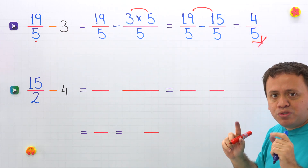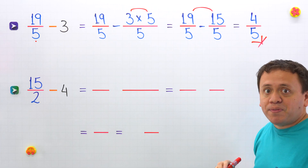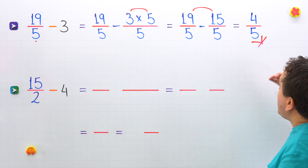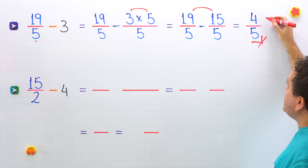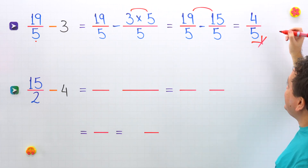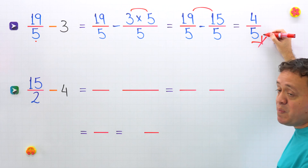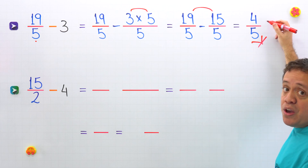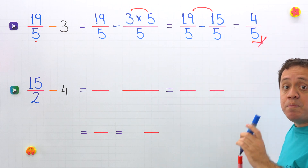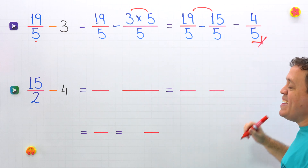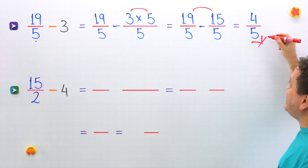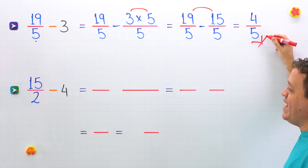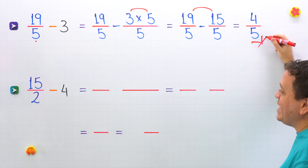At this point, we should remember proper fractions. A proper fraction is a fraction where the numerator, the top number, is less than the denominator, the bottom number. 4 fifths is a proper fraction, given that the numerator 4 is less than the denominator 5.